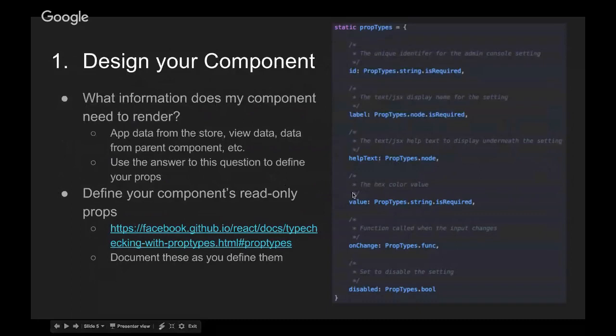When you're designing a component, the thing you want to think about the most is what information does my component need to render? That's the whole point of building a web app component — you want to build something that can display in the UI that the user can interact with or view. It's going to need some sort of information about the state of the app. Try to figure out what that information is, and once you've figured it out, it gets way easier to actually build and design your component. That information could be app data from the store, view state data, data from the parent component, or lots of different things.